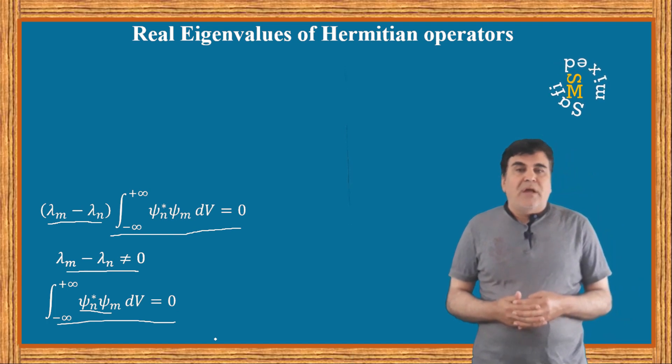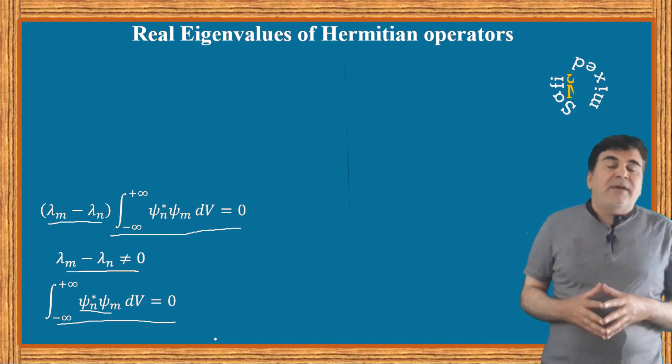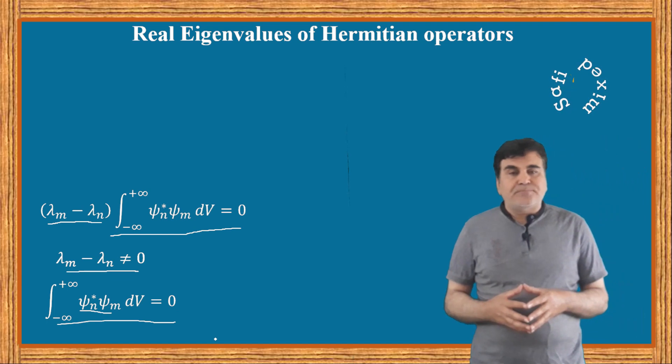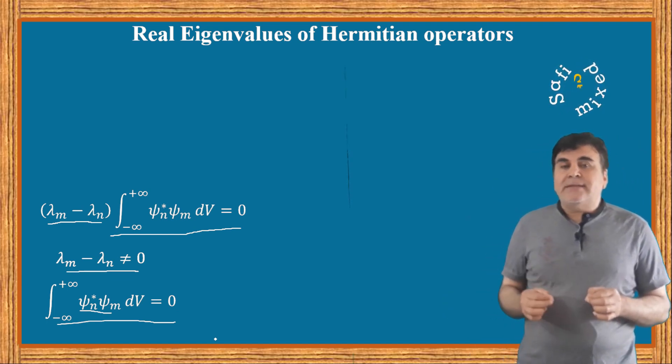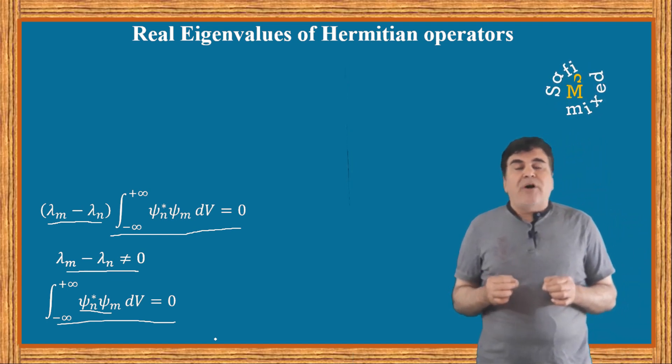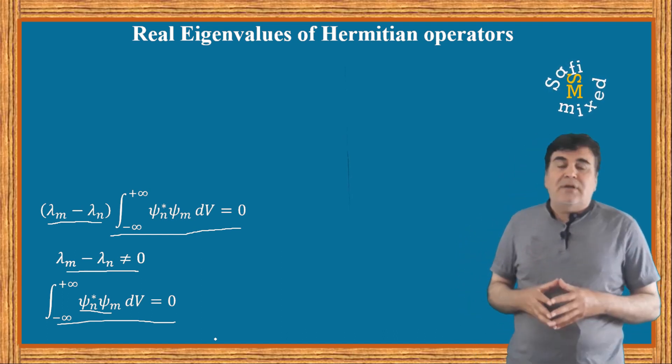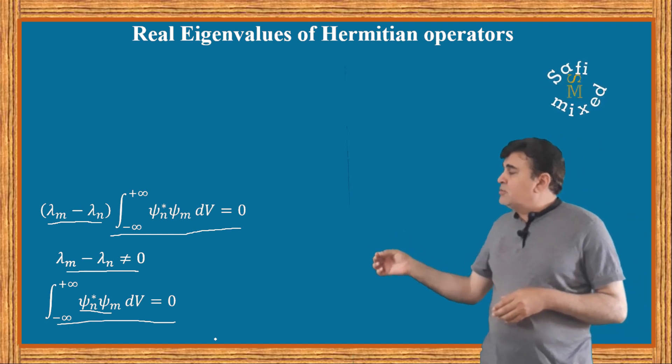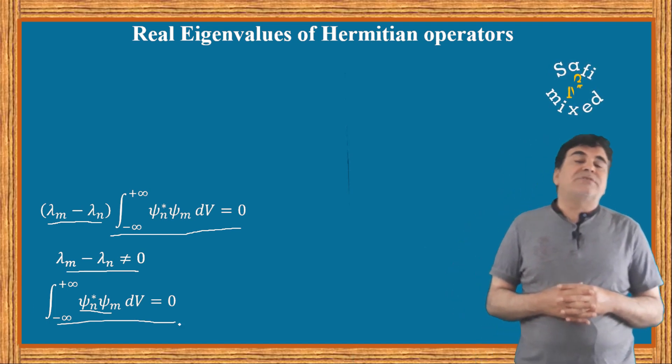Like a set of basis vectors for a finite dimensional space, orthogonal functions can form an infinite basis for a function space. Conceptually, this integral is equivalent to the dot product of vectors.